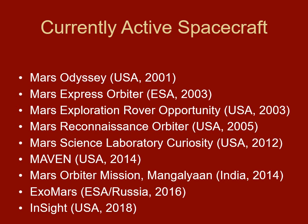Currently there are actually several active spacecraft at Mars. Every two years there's a launch window, and for the last 20 years or so someone has sent a spacecraft. Mars Odyssey has been orbiting Mars for almost 20 years. Mars Express from the European Space Agency is active. The Mars Reconnaissance Orbiter and Mars Science Curiosity rover are currently working. The MAVEN spacecraft, the Mars Orbiter Mission — an Indian spacecraft — are orbiting and studying Mars. ExoMars is a European spacecraft with a Russian ride-along probe, and that one's working.